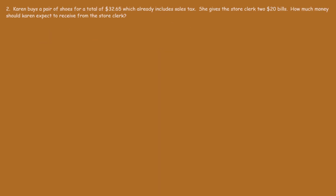Now let's move on to number 2. Karen buys a pair of shoes for a total of $32.65, which already includes sales tax. She gives the store clerk 2 $20 bills — that's a total value of $40. How much money should Karen expect to receive back from the store clerk?